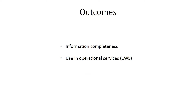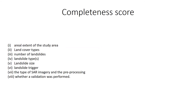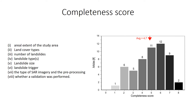Two points may be of interest for today's meeting: discussing the completeness of the information found in the reviewed works, and the potential use of SAR in operational services. We tried to quantify the abundance of information in each study, selecting eight information types considered relevant to characterize the landslide event and the type of SAR product. We attributed to each article a completeness score from 0 to 8, regardless of quality, and the average score is 4.7.